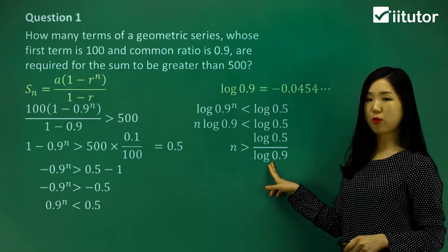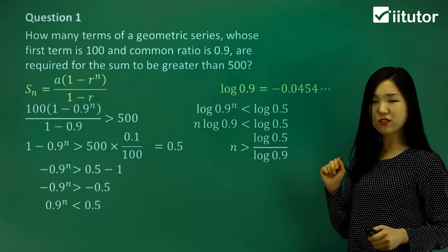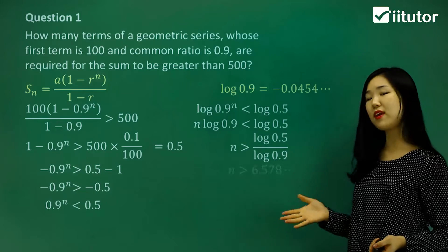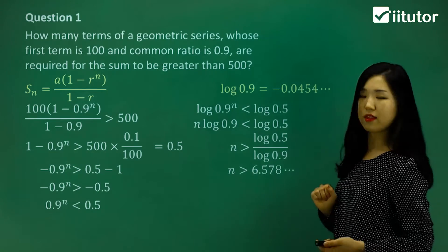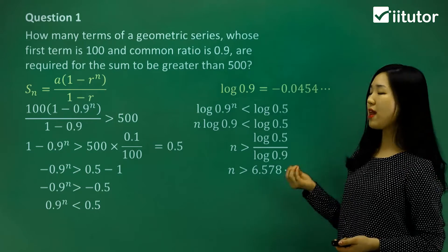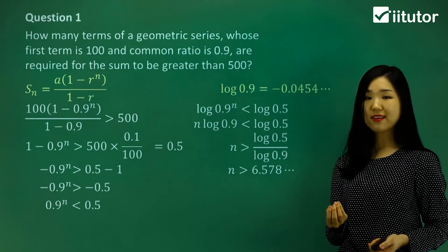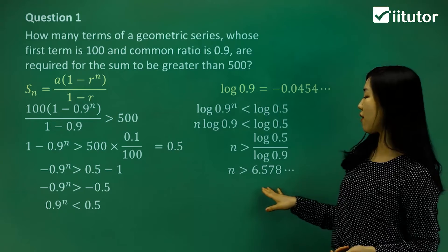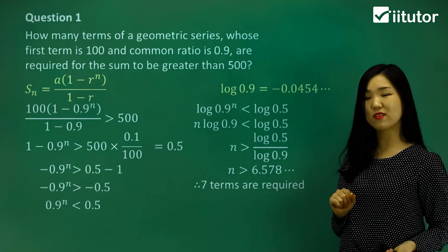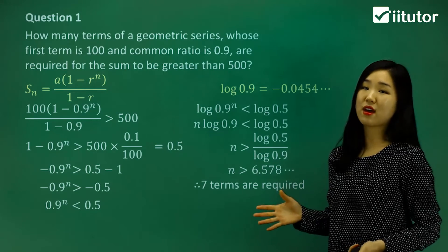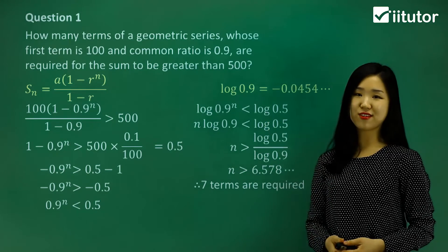So now log 0.5 divided by log 0.9, put it into the calculator for me, and you'll get a value of 6.578, something like that. And then we want n. n must be a whole number. So what's the first whole number greater than 6.578? Must be 7. So we consider 7 terms are required to make the sum greater than 500.